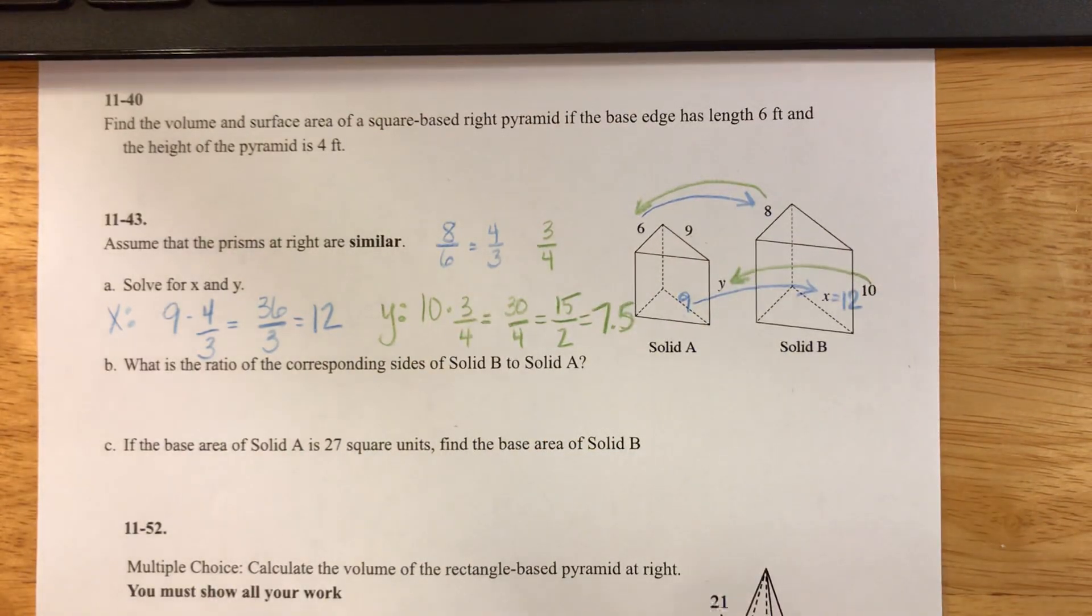So that's how I find x and y. Part B says, what is the ratio of corresponding sides of solid B to solid A?